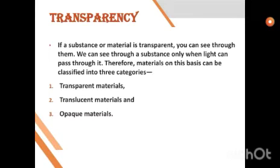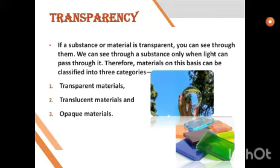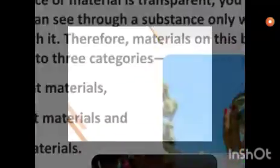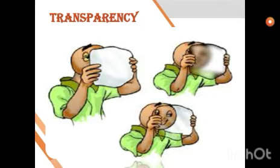The next property is transparency. If a substance or material is transparent, you can see through it — we can see through a substance only when light can pass through it. Materials can be classified into three categories: transparent, translucent, and opaque. Looking at this picture, the man is holding three things. In the first one, the face of the man cannot be seen through the white sheet — that is opaque. In the second picture, you can see a blurry image of his face — that is translucent. In the last one, you can clearly see his face — that is transparent.